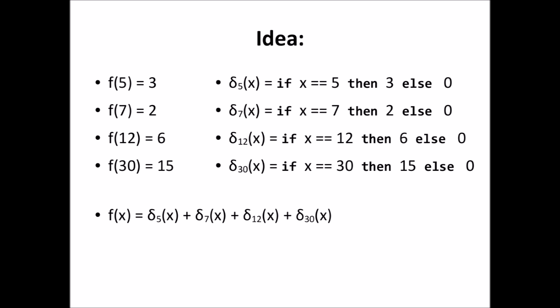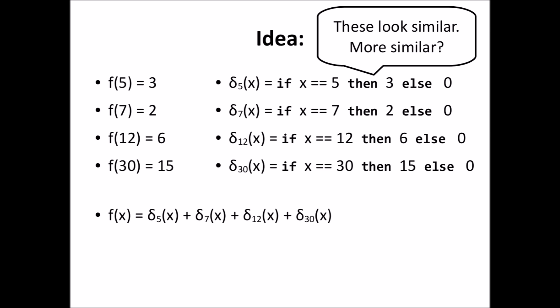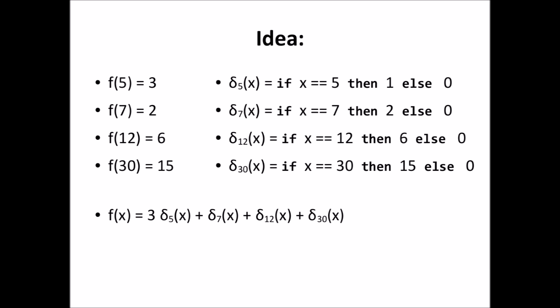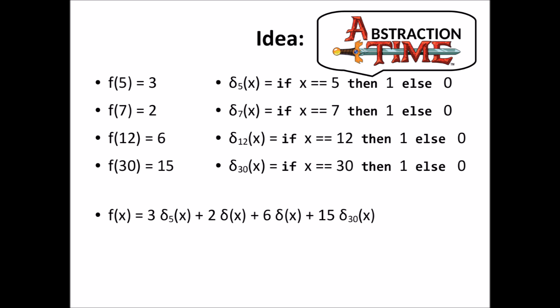You can see that this function f indeed behaves as we want for the four points. If we plug in x equals 7, for example, then f of x becomes 0 plus 2 plus 0 plus 2, which is 2. So f of 7 is 2, which is what we wanted. And this works for the other three points as well. Now, these delta functions all look very similar. So instead of returning 3 or 0 for delta 5, we're now going to make it return 1 or 0. And in our final function f, we multiply the result of delta 5 by 3. In the end we still get the same result — either 3 times 1, which is 3, or 3 times 0, which is 0. We can do this for all the other delta functions as well. So they all have the form: delta i of x is 1 if i equals x, and otherwise 0.